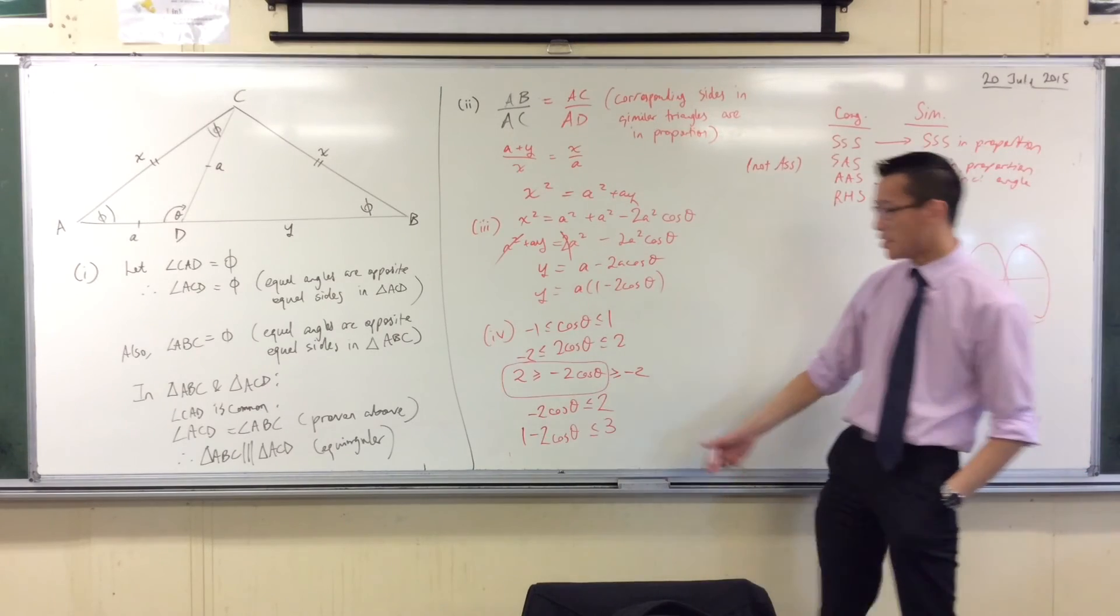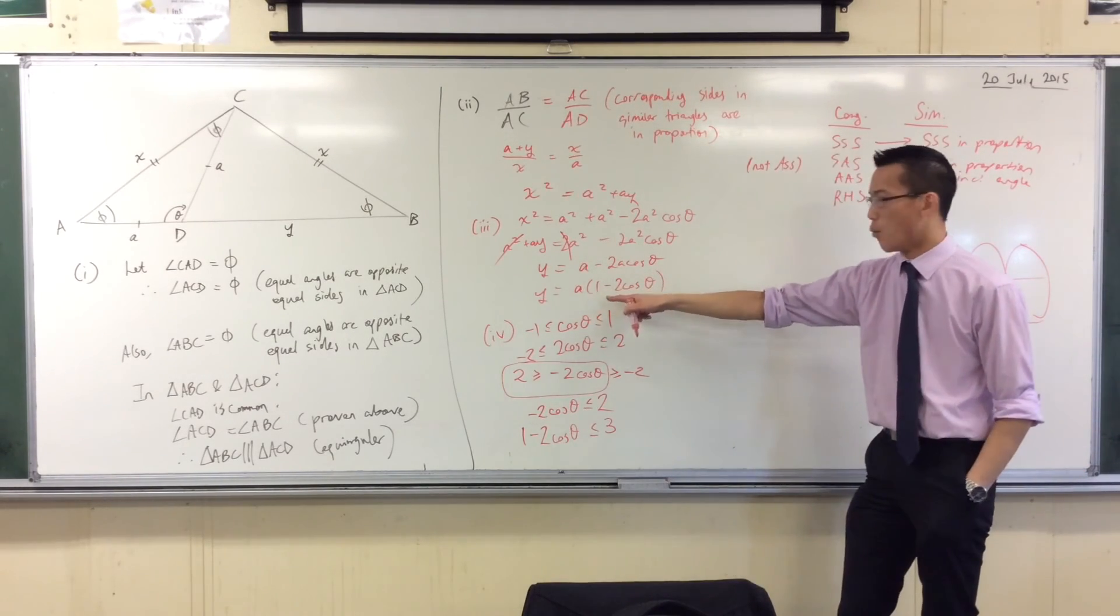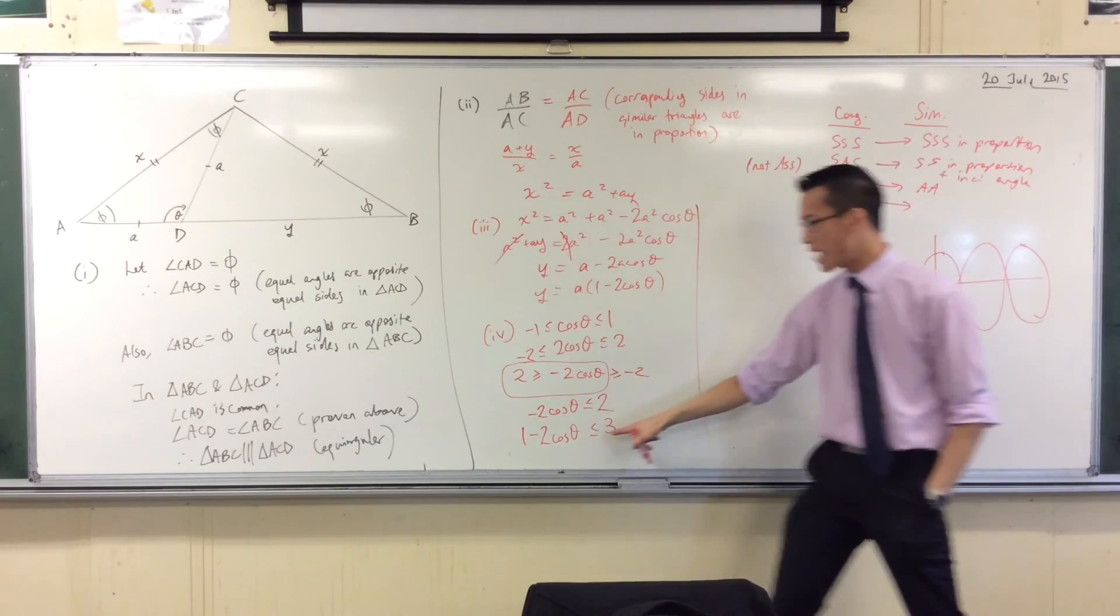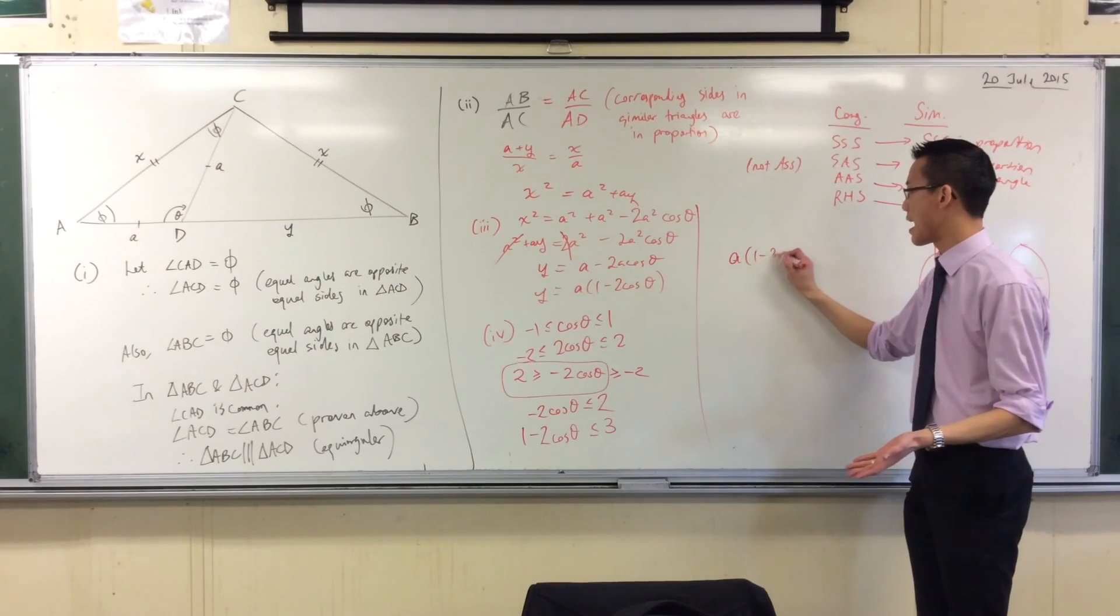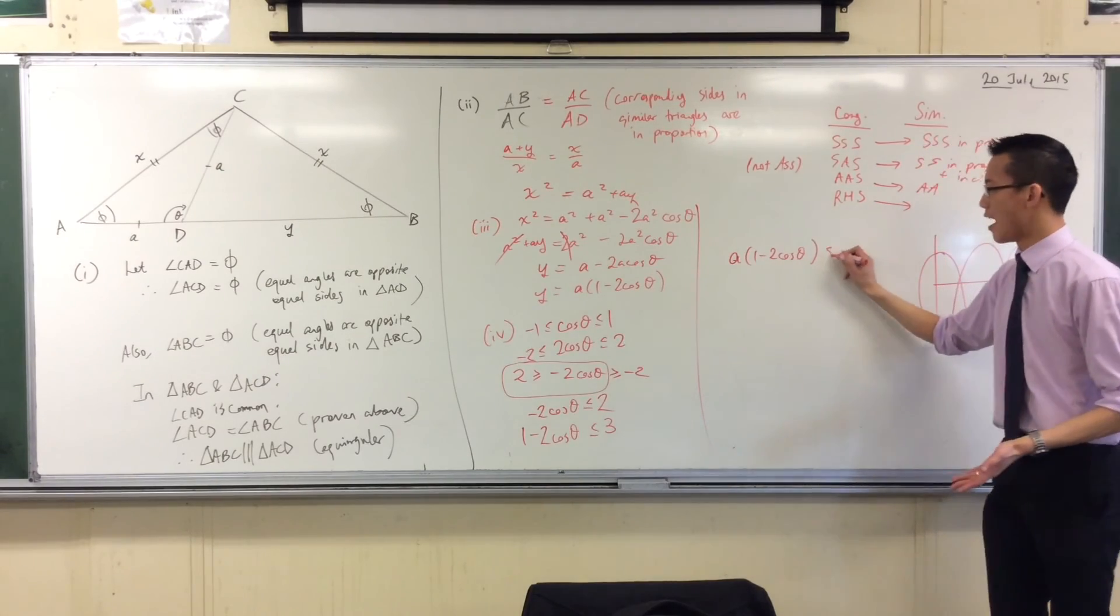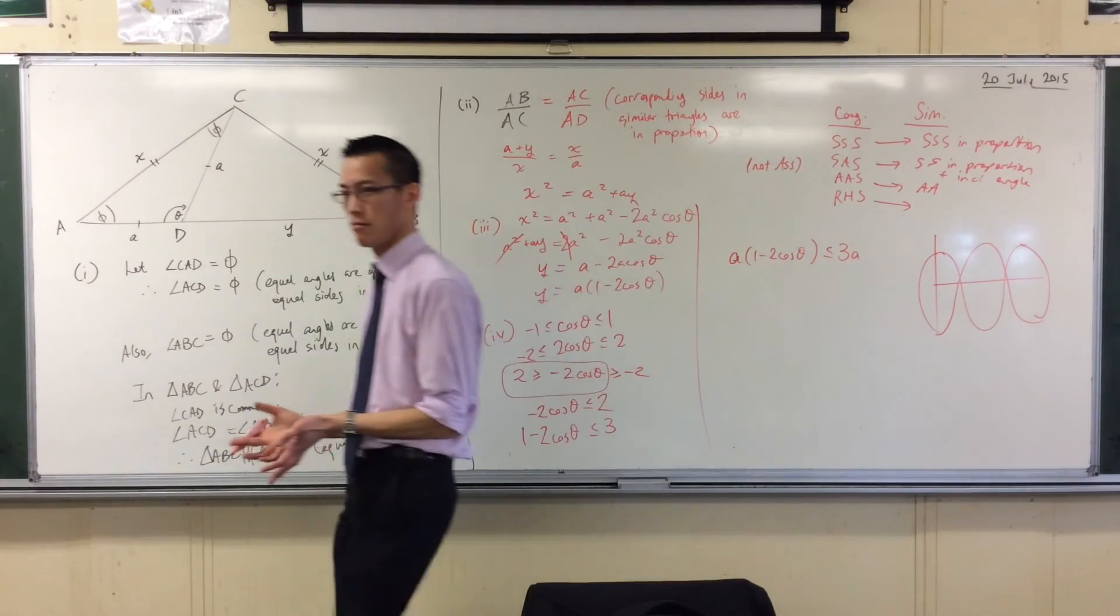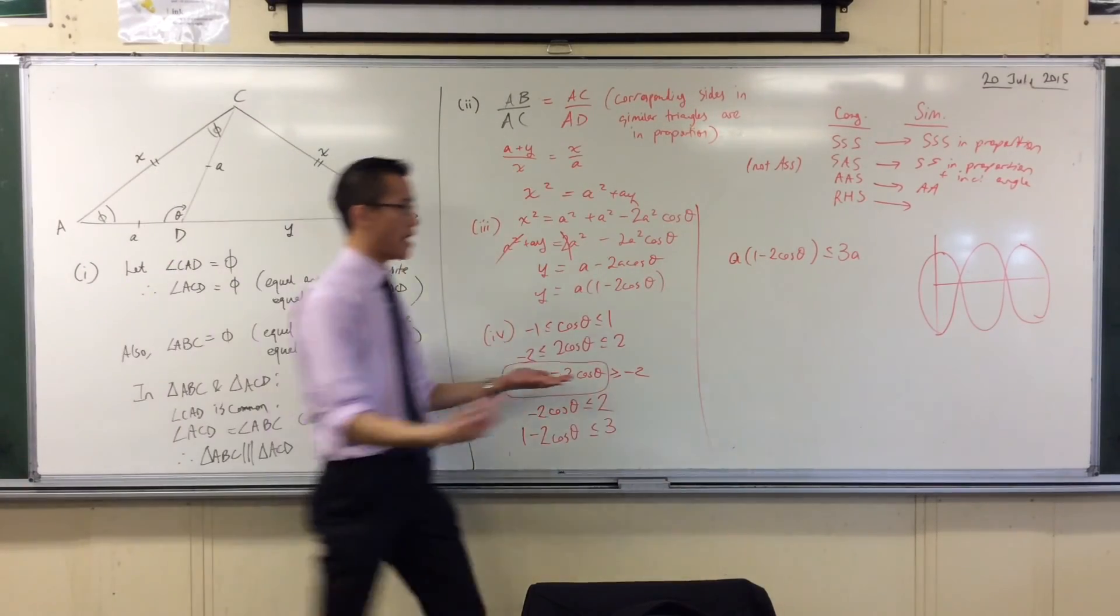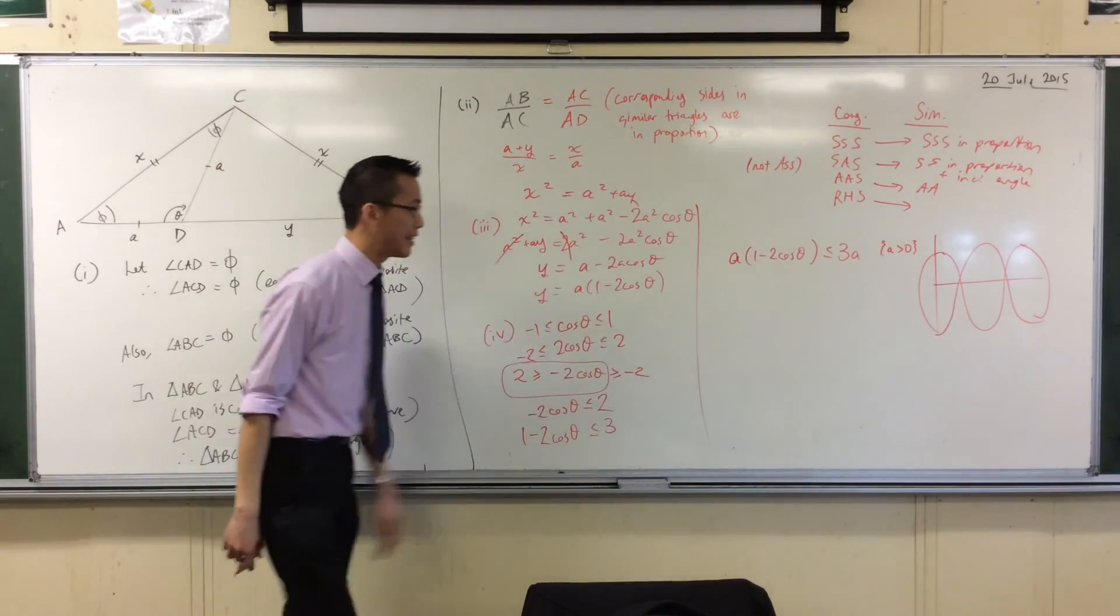Oh, but wait. I don't just have a 1 minus... Are you sick of me yet, right? I have an A times 1 minus 2 cos theta. So I have to take this thing, and I have to multiply both sides by A. By the way, I can totally do that and not change around with the inequality. Why? Because A is a length. So A is positive. Right? No principles violated.